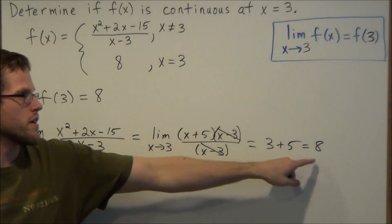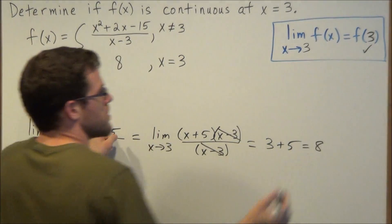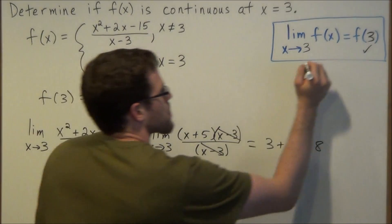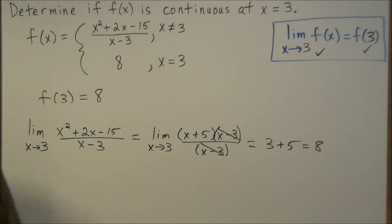So one thing we can notice right away, this shows that our function value is equal to our limit. So this is enough to conclude that f of x is continuous at x equals 3.